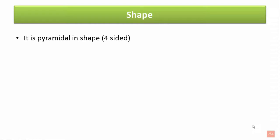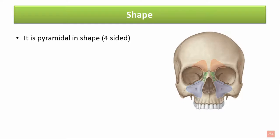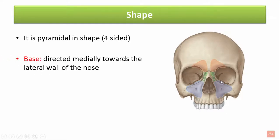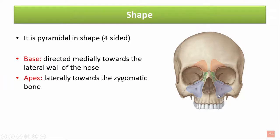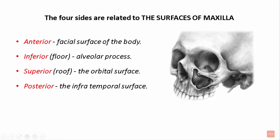The maxillary sinus is a four-sided pyramid which has a base and an apex. The base is directed medially towards the lateral wall of the nose, and the apex is directed towards the zygomatic bone. The four sides are related to the surfaces of the maxilla: the anterior surface to the facial surface, the inferior to the alveolar process, the superior to the orbital surface, and the posterior to the infratemporal surface of the maxillary bone.